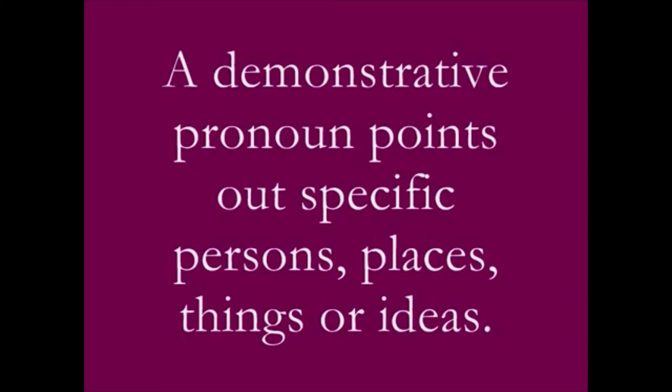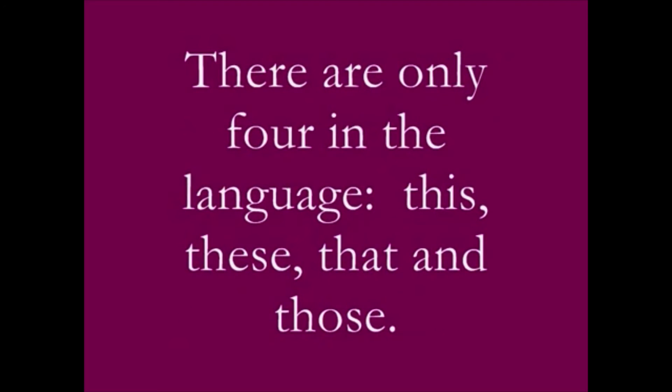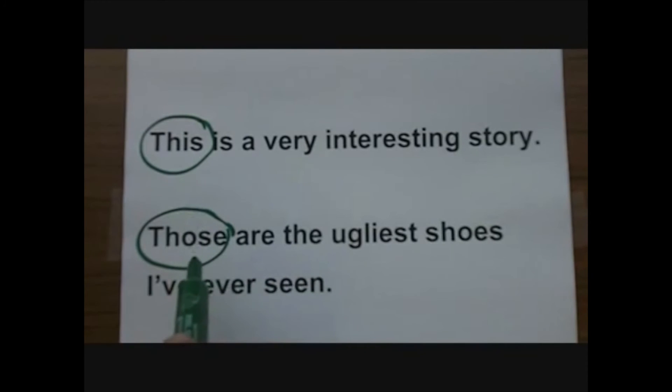A demonstrative pronoun points out specific persons, places, things, or ideas. There are only four in the language: this, these, that, and those. For example: 'This is a very interesting story' — 'this' is your demonstrative pronoun. If you see the word this, these, that, or those, it is always going to be a demonstrative pronoun. 'Those are the ugliest shoes I've ever seen' — there's that demonstrative pronoun again. In both cases, these pronouns are functioning as the subject of the sentences.